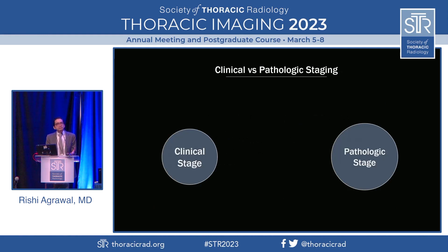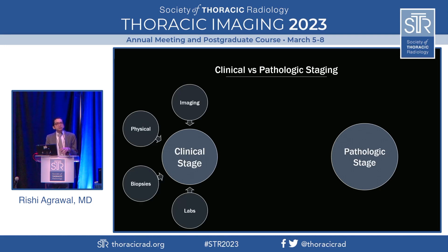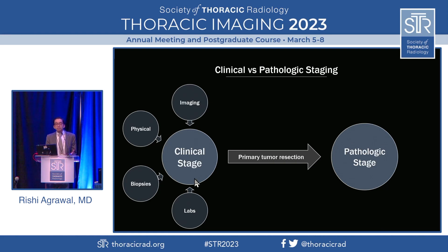You should know the difference between clinical staging and pathologic staging. Clinical staging includes all information obtained up to the primary tumor resection — the biggest component for us is imaging, but also physical exam, biopsies, and labs. When the primary tumor is resected, that information is combined with the clinical stage to get the pathologic stage. If a patient's treatment plan doesn't include removal of the primary tumor, they will only get clinical staging.